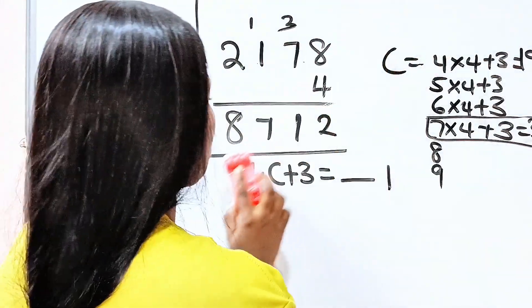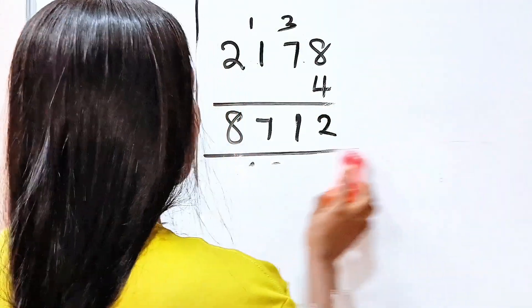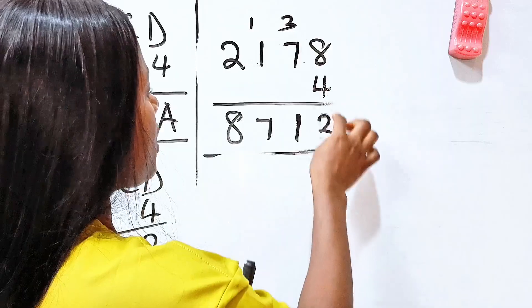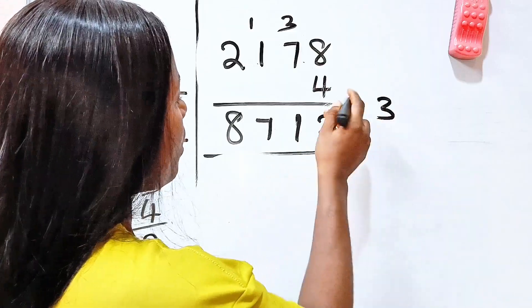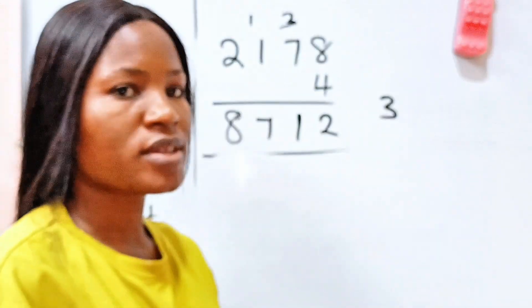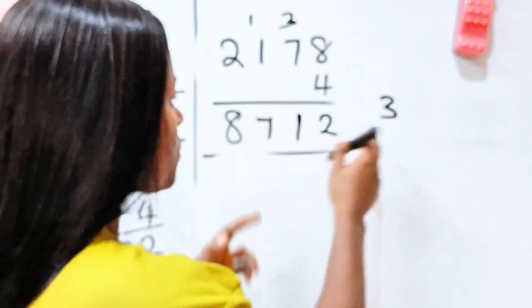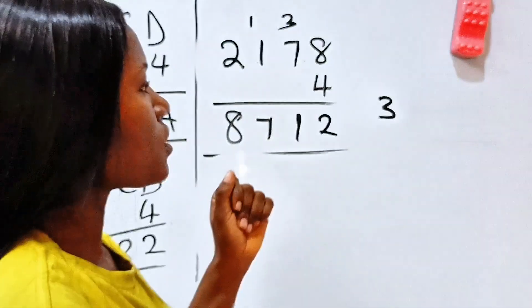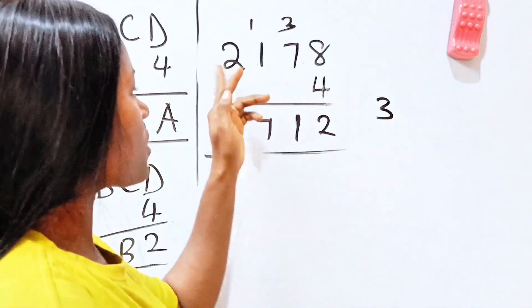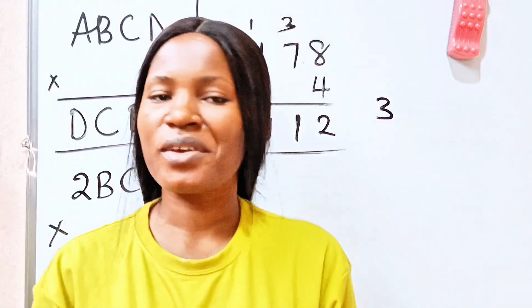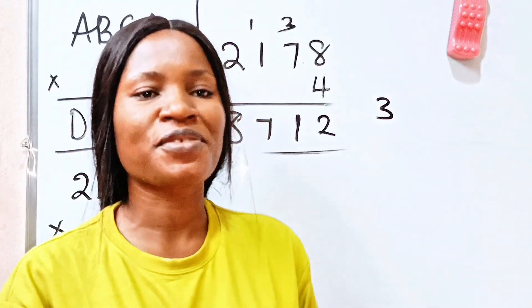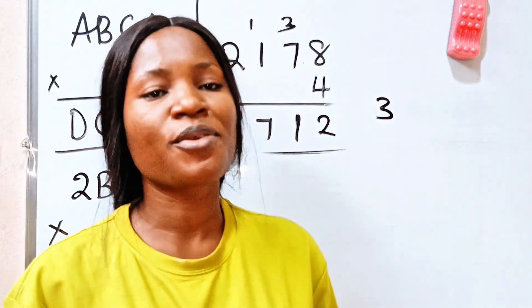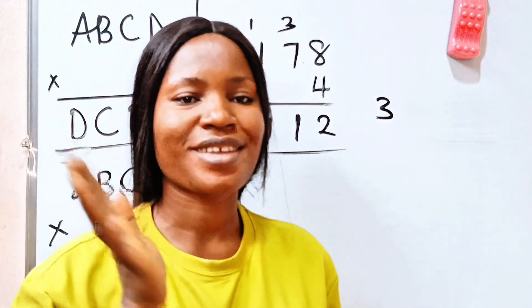Let's verify. 4 times 8 is 32. Write 2 carry 3. 4 times 7 is 28. Plus 3 is 31. Write 1 carry 3. 4 times 1 is 4 plus 3 is 7. 4 times 2 is 8. And that shows that we are correct. Thank you so much for stopping by. And I hope to see you in my next video. Bye.